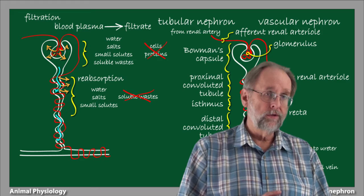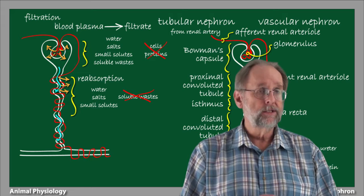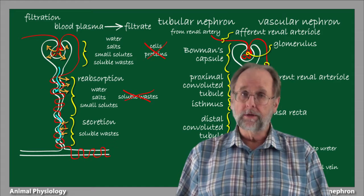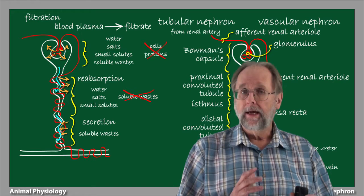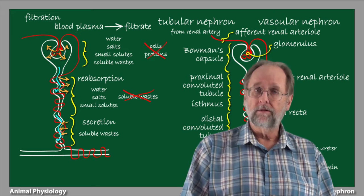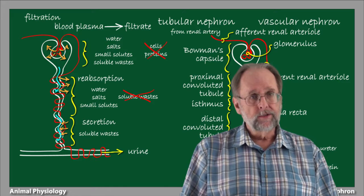As the filtrate modified by reabsorption flows through the convoluted tubules, it's modified in another way. This is the process of secretion, which is in many ways the opposite of reabsorption. In reabsorption, there's a translocation of materials to the body fluids from the space contained within the convoluted tubules and collecting ducts. In secretion, material is translocated the other way, from the body fluids into the tubule. The end product of this serial process of filtration, reabsorption, and secretion is urine.